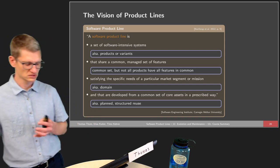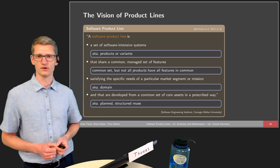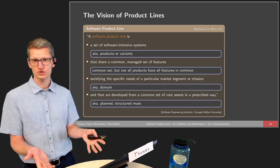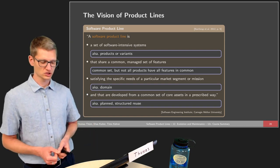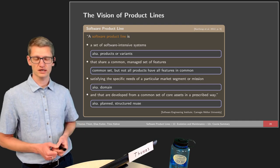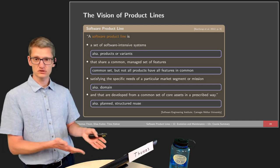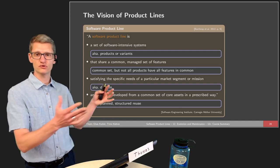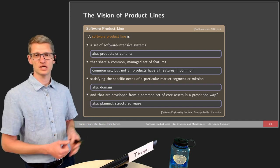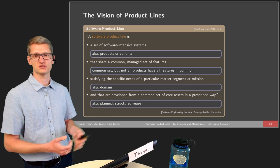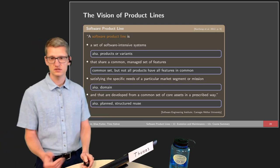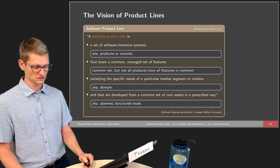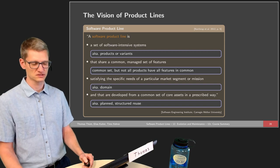The most ad hoc approach is probably clone and own, where we simply copy the system and make our changes — which is, according to that definition, not a product line technique. On the other hand, we have plugins, where we need to foresee all possible changes to the system by means of possible extension points. This is where planning is at the highest possible standard.